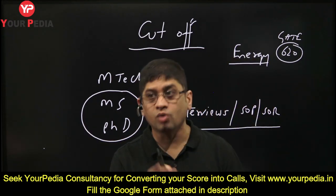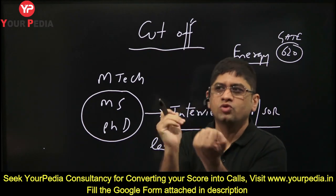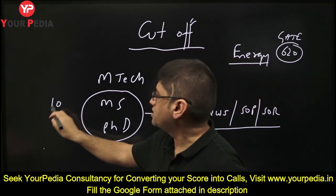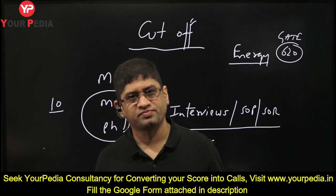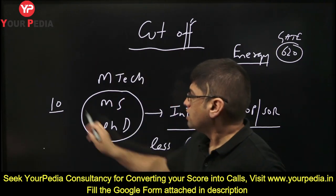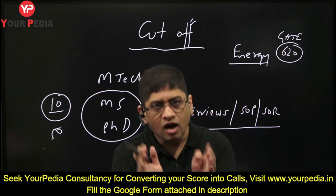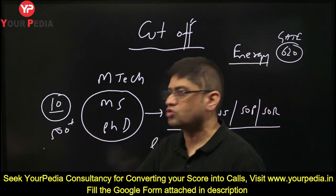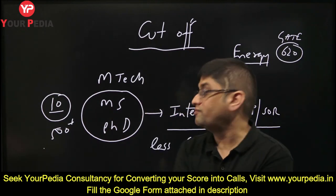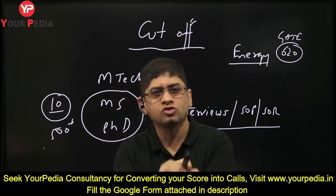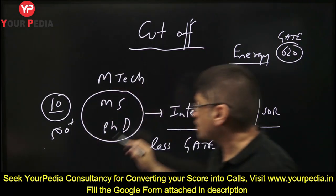GATE score just needs to be qualifying — it is not a heavy criteria. But obviously when students apply, a department will decide internally. For example, if a civil engineering department at IIT Madras wants 10 MS students, they may call 50 students for interview. If 50 students are available with 500+ GATE score, they won't call a 450-score student. But if they don't get 50 students above 500, they'll call whoever qualifies. So cut-offs are basically not given for these courses.